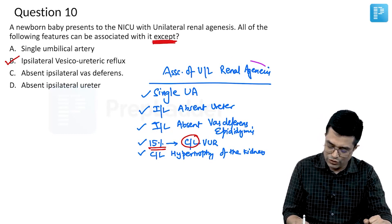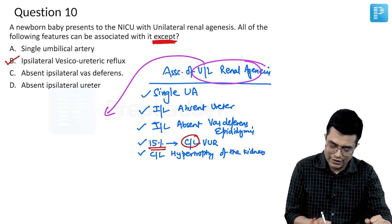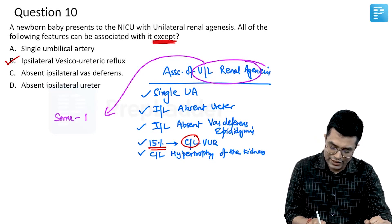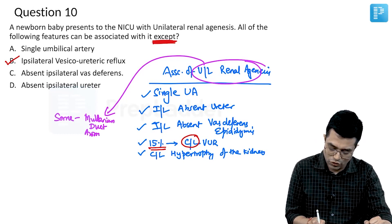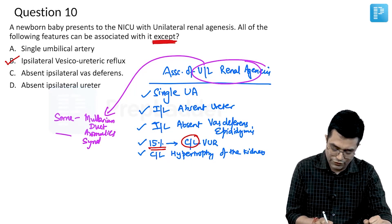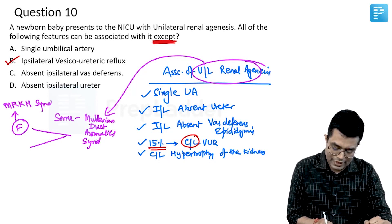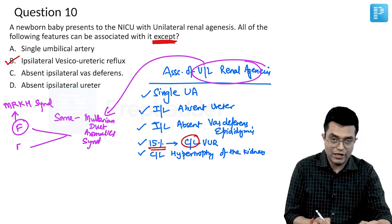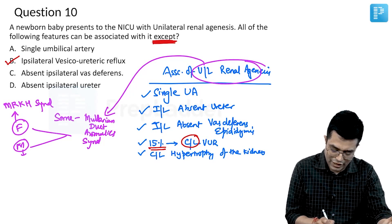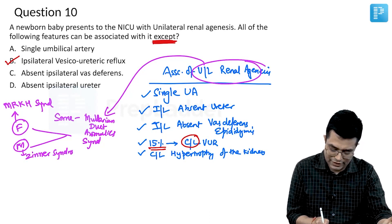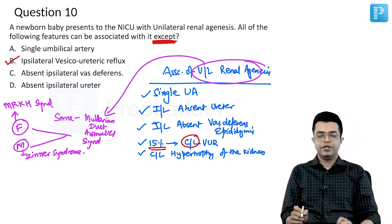Note that some of these unilateral agenesis patients may also have Mullerian duct anomalies. In females, this is the Meyer-Rokitansky-Küster-Hauser syndrome, and in males, it is called Zinner syndrome. Details have been discussed in another video.